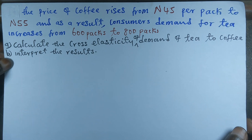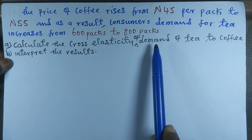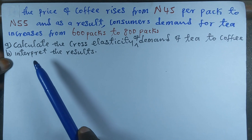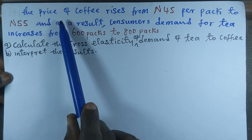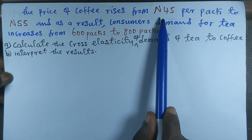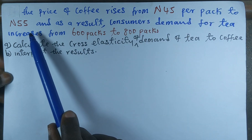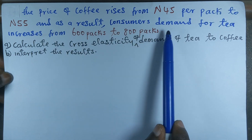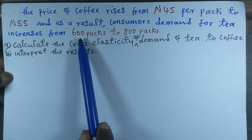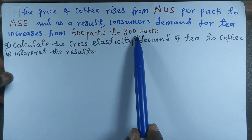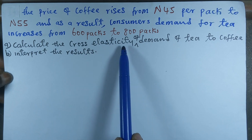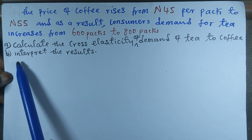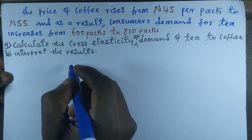Welcome to another session of Sam's Economics tutorials. In this tutorial, I'm going to show you how to calculate the cross elasticity of demand and also to interpret the equation. The question says: the price of coffee rises from 45 naira per pack to 55 naira, and as a result, consumers' demand for tea increases from 600 packs to 800 packs. Our focus is to calculate the cross elasticity of demand of tea to coffee and to interpret the results.